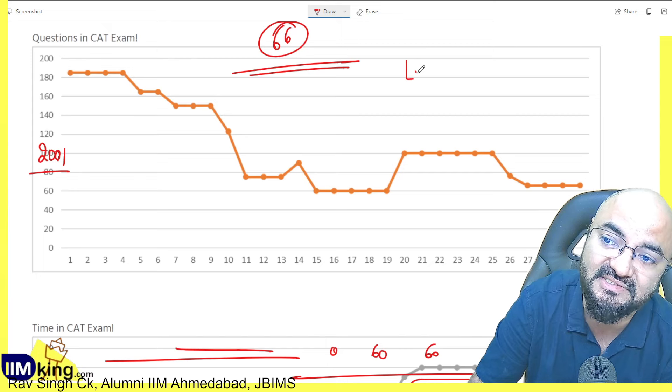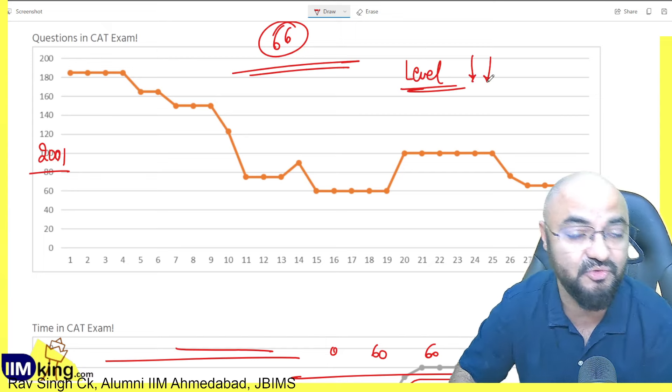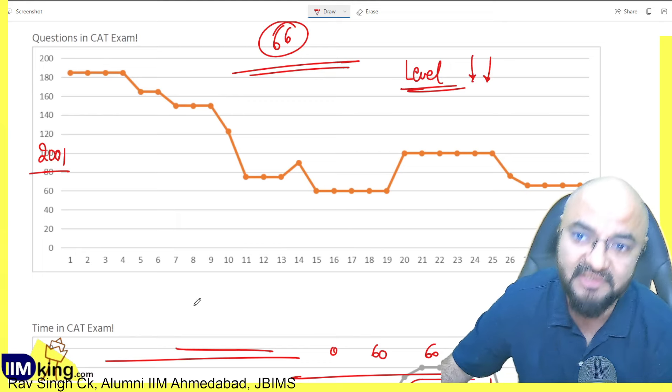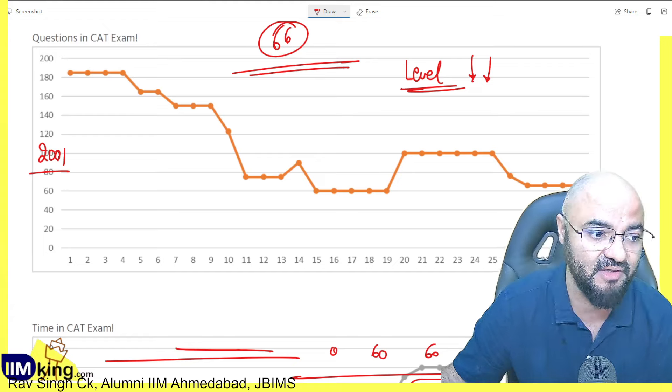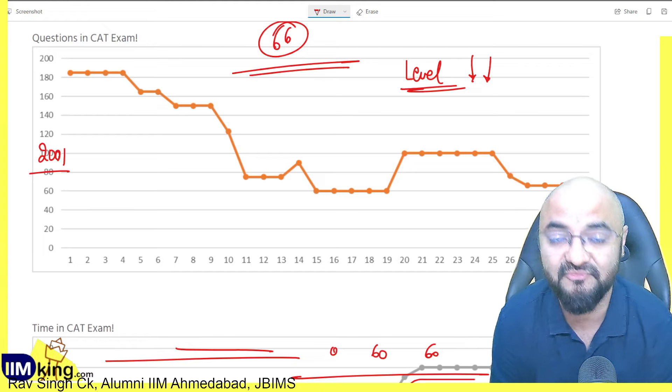The only thing they need to work on is the level of difficulty. I think the level of difficulty they have to bring down a bit, especially for all the three sections in fact. Not just Quant or DI Logic, Verbal also needs to be overhauled. They need to completely change that. They need to hire a few consultants.